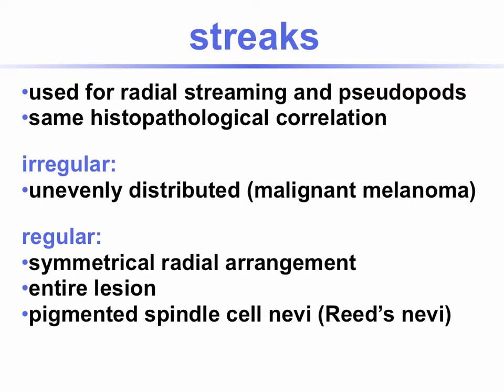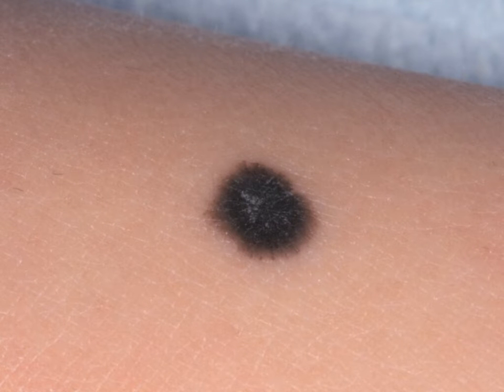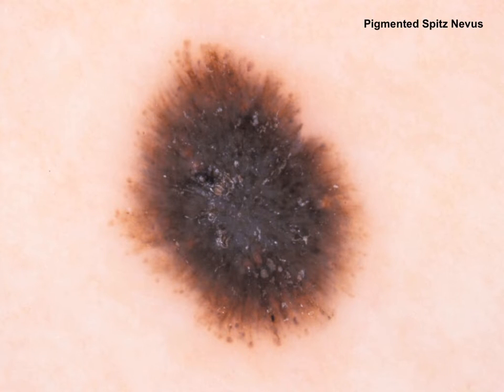Streaks. The term 'streaks' is used for radial streaming and pseudopods together because they have the same histopathological correlation. Streaks can either be regular or irregular. Irregular streaks are unevenly distributed and are usually seen in malignant melanoma. Regular streaks are symmetrically radially arranged throughout the entire lesion and are seen in pigmented spindle cell nevi, Reed's nevi, or Spitz nevi. This is the case of a child, and here you see very nicely the starburst pattern with multiple pseudopods at the periphery and radially arranged streaks symmetrically throughout the entire lesion.